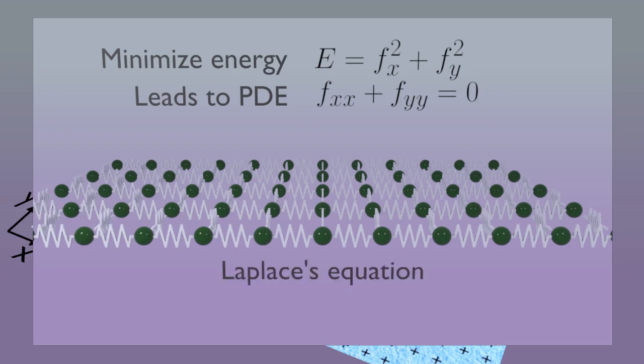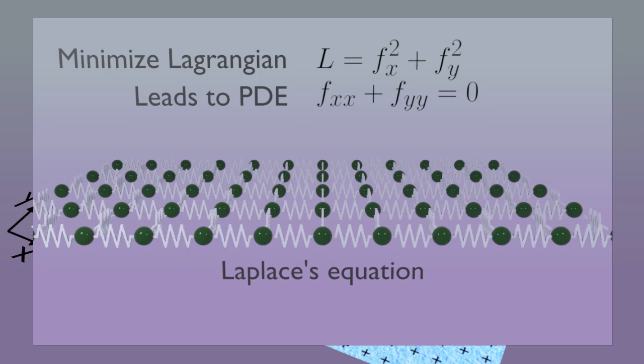After minimization has finished, the membrane has settled into a shape described by this equation, which is called a Laplace equation. In physics, we often have things that behave as if they were made of particles and springs, even if they are not. Then we don't call the energy an energy. Instead, we call it the Lagrangian, and we use the symbol L instead of E.